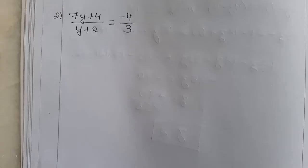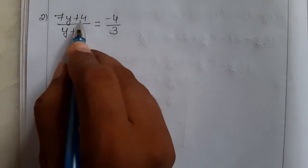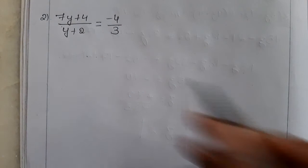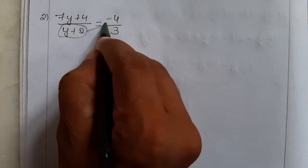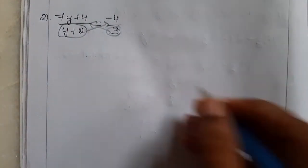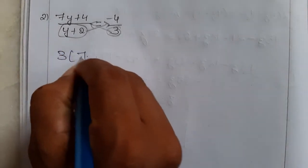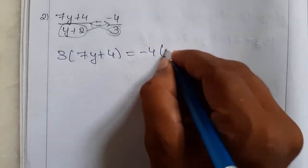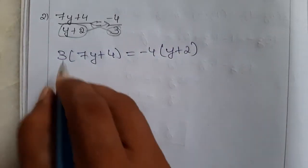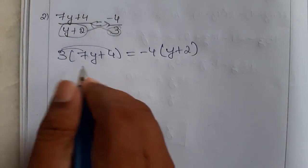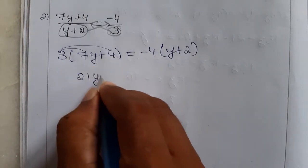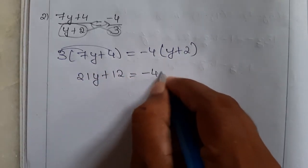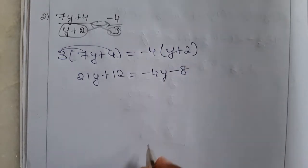Next problem: 7y plus 4 divided by y plus 2 is equal to minus 4 by 3. We consider the left side as one term — it is a division. Bring 3 to that side; it becomes multiplication. So, 3 into (7y plus 4) equals minus 4 into (y plus 2). Expanding: 21y plus 12 equals minus 4y minus 8.